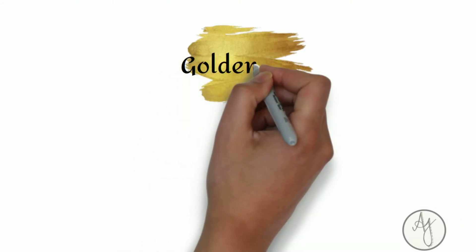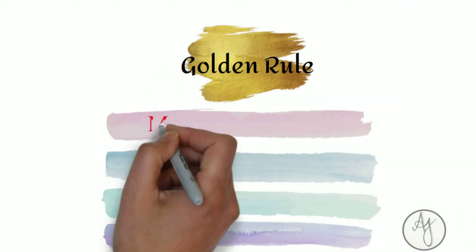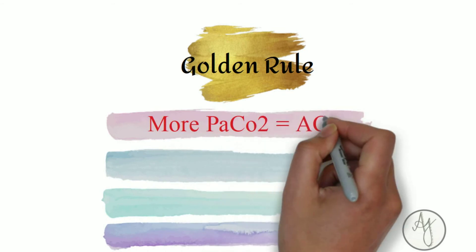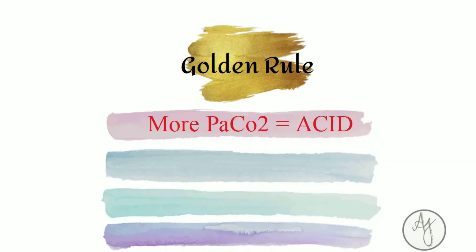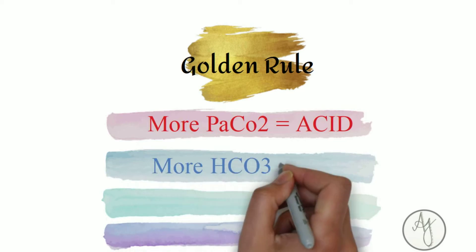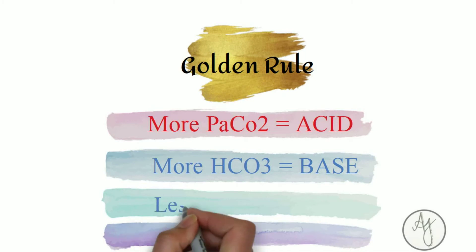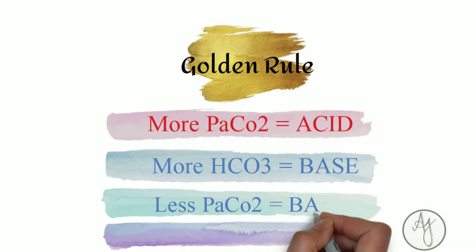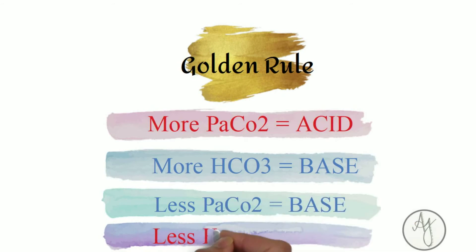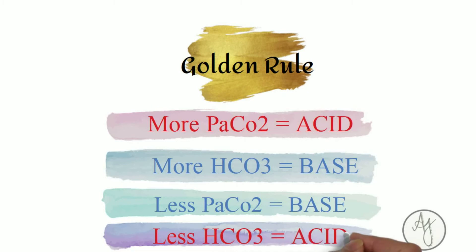There's a golden rule: more CO2 means acid — the more the CO2, the more acidotic the body is — whereas more bicarbonate means base. Similarly, less CO2 means base, and less HCO3 or bicarbonate means acid. Always remember this — you have to keep it in mind if you want to read an ABG fast.